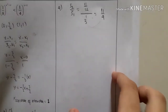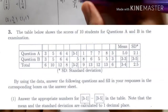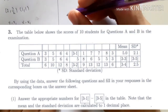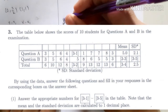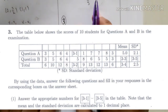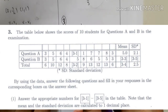Welcome to this Momtuka Gaku show, Mathematics A 2016. Now we discuss Part 3. Part 3 has a question about statistics — just remember the formula and you can do it. The table below shows the scores of 10 students for questions A and B in the examination, with the mean, standard deviation, and total score.